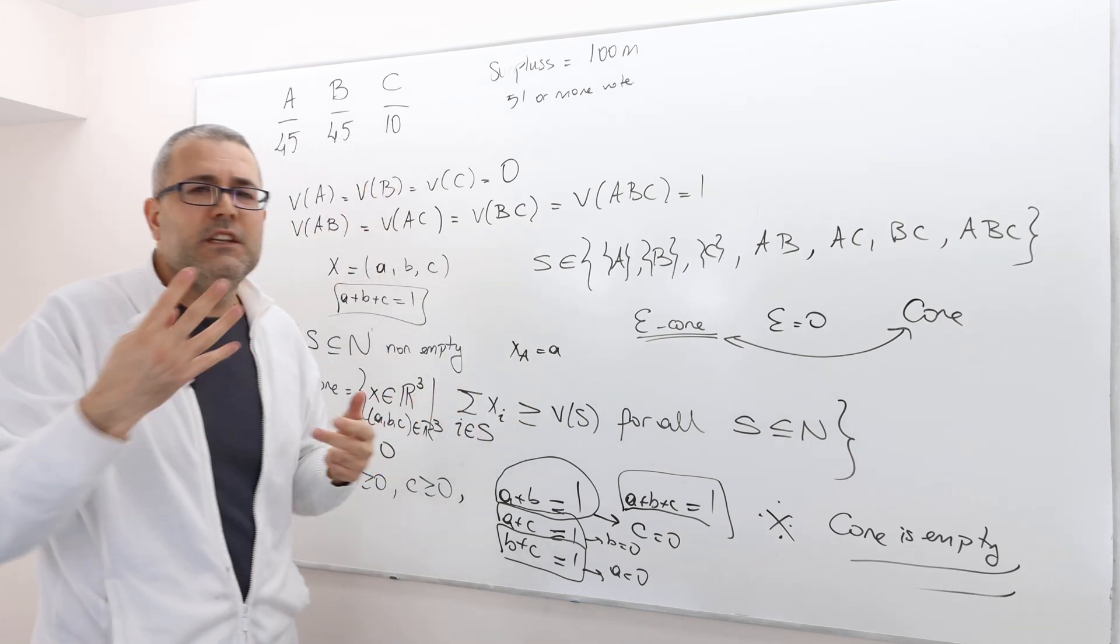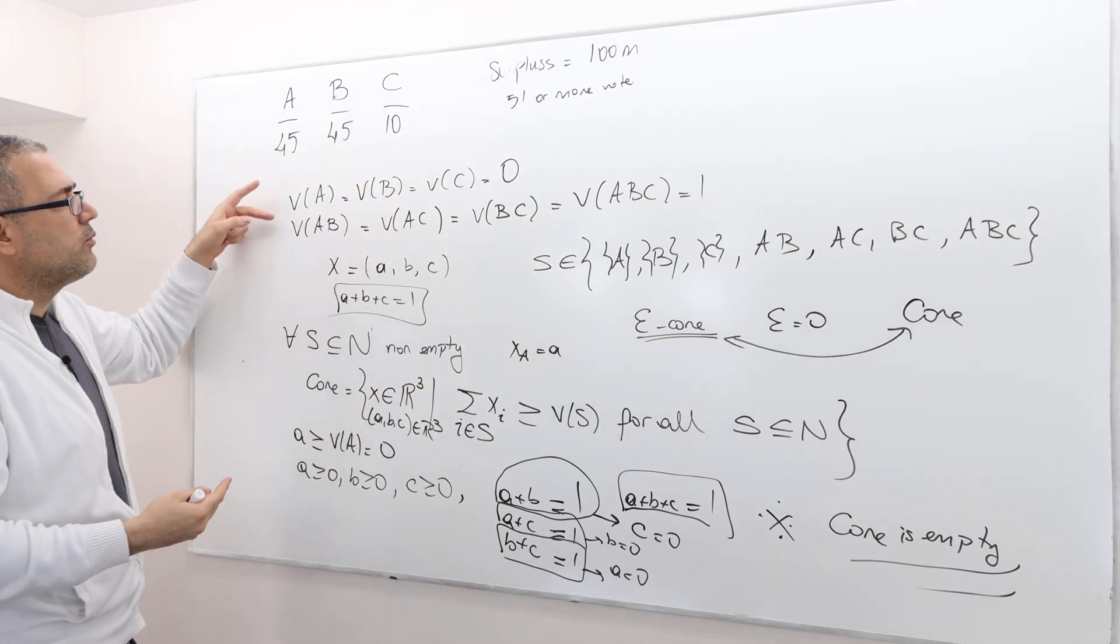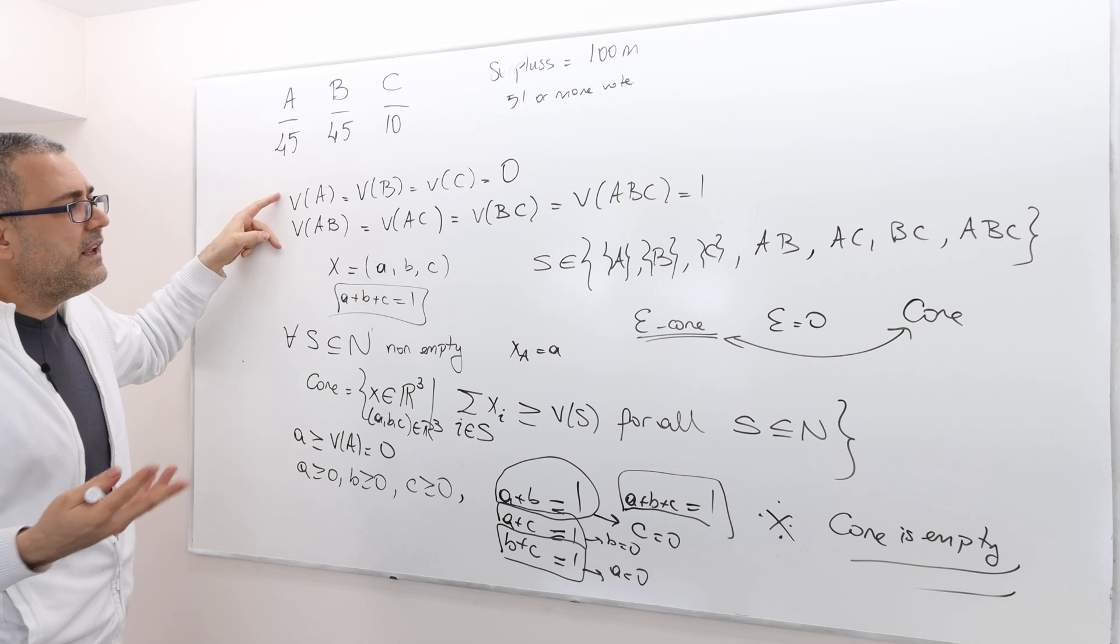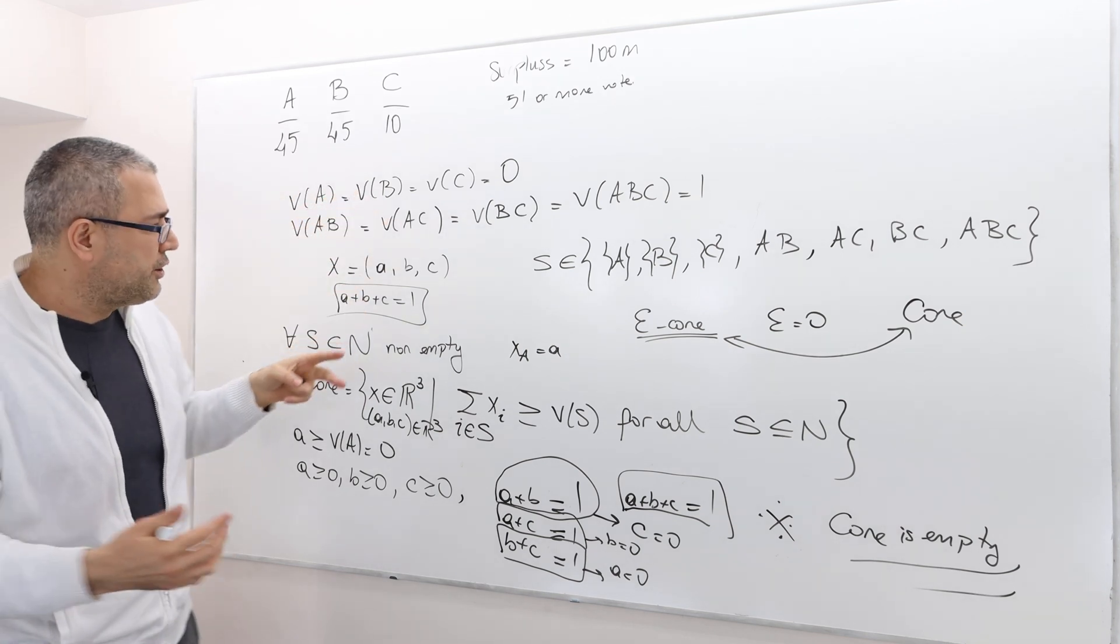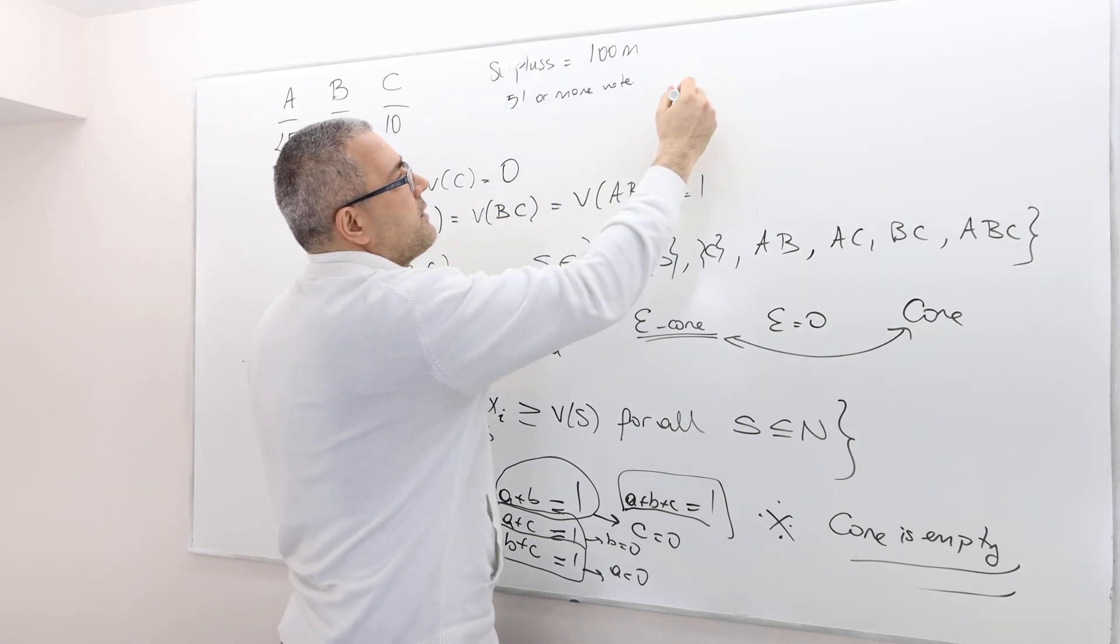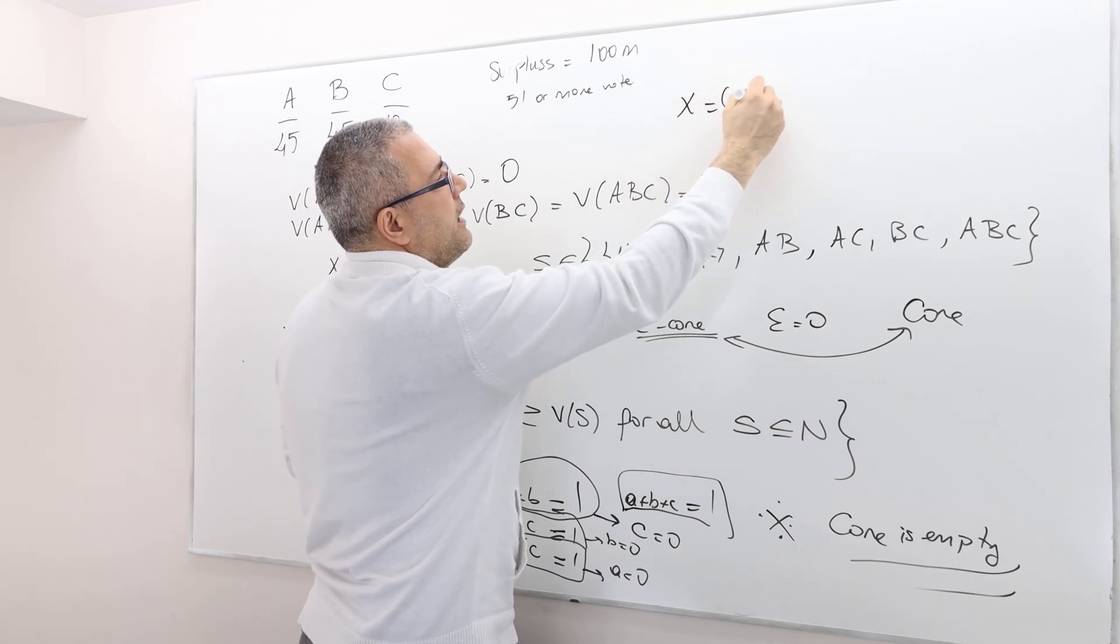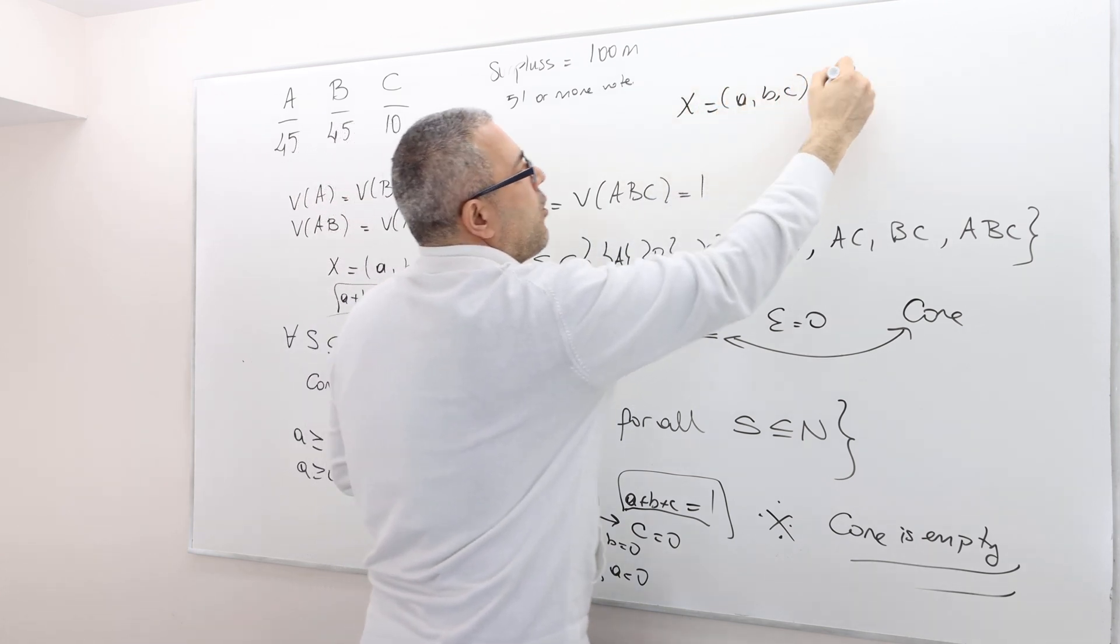But then how small can we make this epsilon? Well, the intuition behind this is that if epsilon is 0, that basically means no coalition. And let's suppose some x vector, which is A, B, C, is in the core.